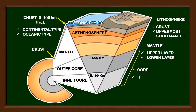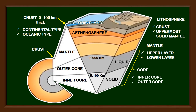The inner and the outer cores are both made up of iron and nickel alloy. The inner core is in a solid state because it experiences very high pressure from the three layers above it: the outer core, the mantle, and the crust. The pressure in the outer core is not high enough to make it solid, which is why it is molten, or in liquid state.